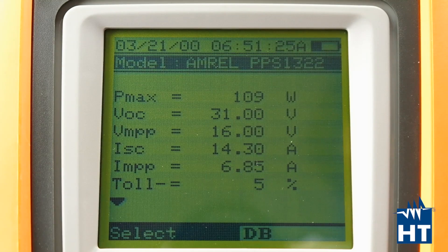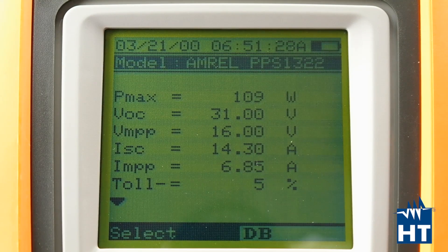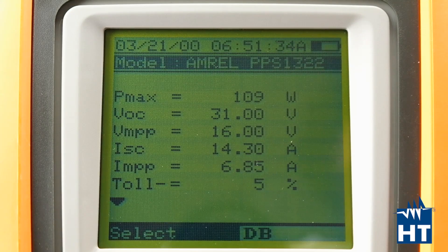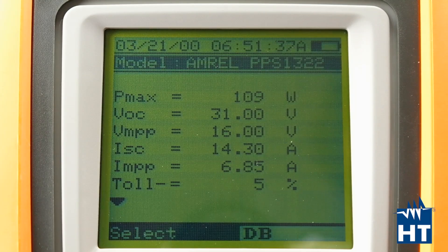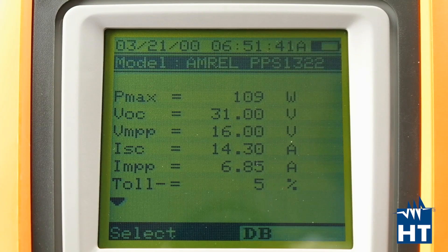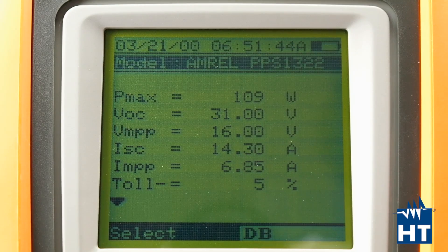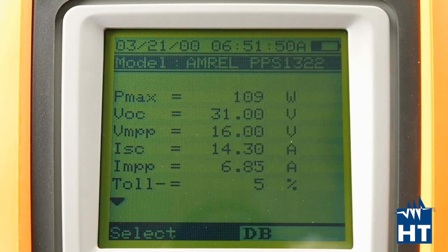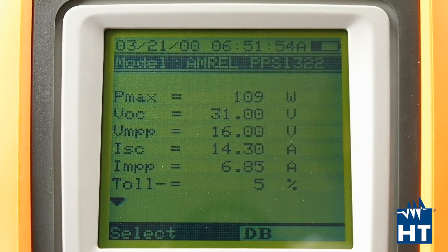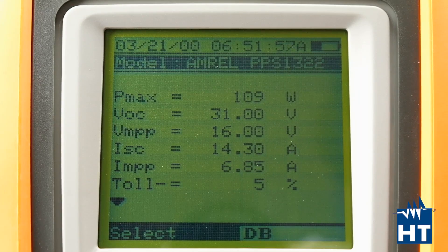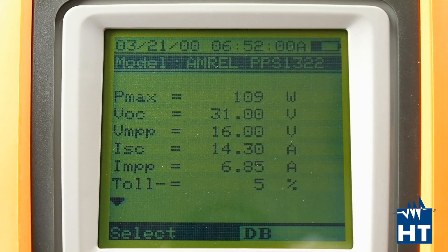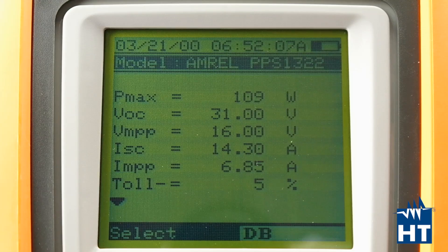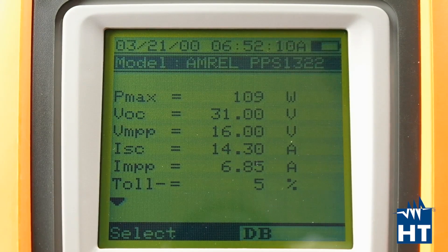As I told you before, we have 30,000 modules on the database in our Top View software, which is included in the package. We can use this module database to download up to 30 modules into the IV400W. If you don't find your module into the database, you can easily manually add your module on the field. You just have to read the data on the plate of the module and then you can save it.